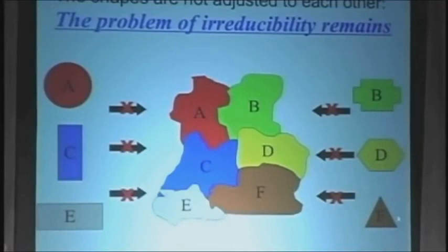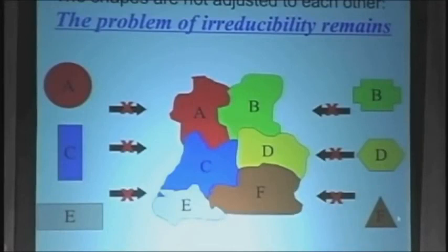This is the real problem that would face that scenario. You would have proteins A, B, C, D which did not have the right shapes in order to bind to each other. In order to form an irreducibly complex molecular machine, they would have to pre-adapt all of their shapes in order just to bind to each other.